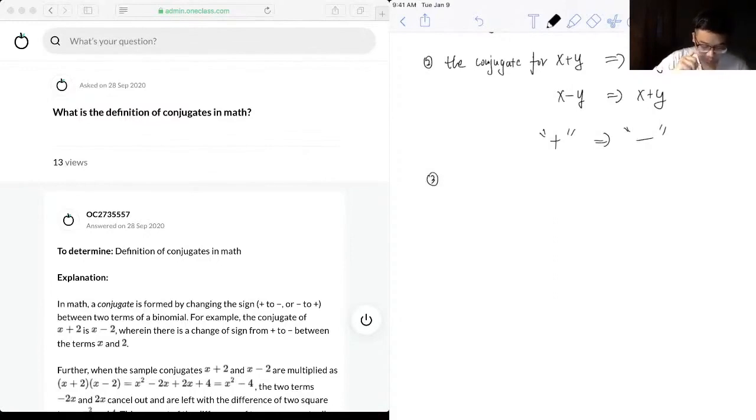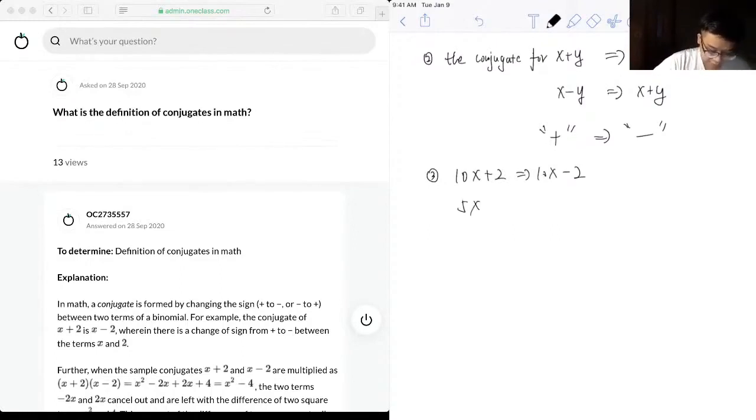So when we are calculating with the real numbers, let's say 10x plus 2. So the conjugate of 10x plus 2 will be 10x minus 2. And with 5x plus 4 will be 5x minus 4.